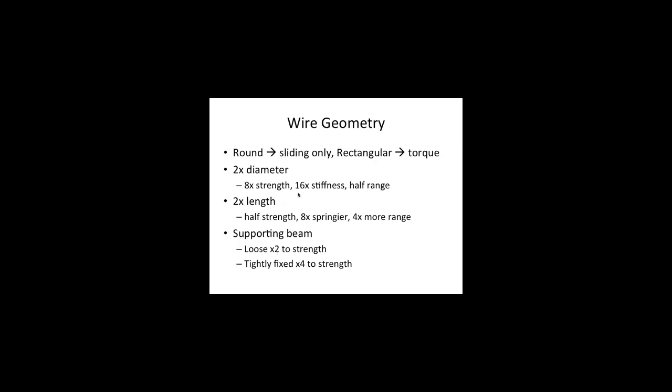These calculations are for cantilevers, where a wire is supported only on one side — like at the distal-most portion of the mouth. A supporting beam is pretty much everywhere else between two brackets. As a fast calculation: multiply strength by two if it's loosely attached to both sides, and multiply strength by four if it's tightly fixed. Rubber bands are really useful — they have a great elastic range, you can stretch them far, and they have good strength, but they fatigue really quickly. They absorb water in the mouth, they deteriorate, and their elastic performance gets weaker over time. So they create more of an interrupted force rather than a continuous force.